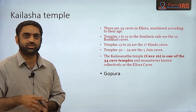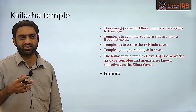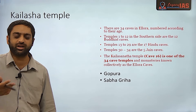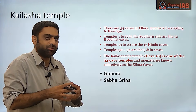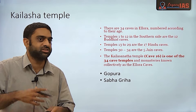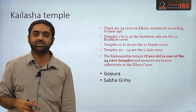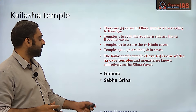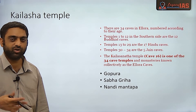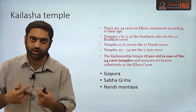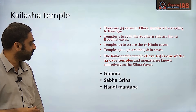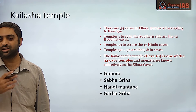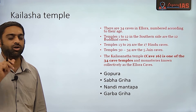Once you enter through the entrance gate, you encounter various mantapas. First is the Sabha Mantapa, or Sabha Griha — the assembly hall where people gathered for functions and dance performances. Then you have the Nandi Mantapa, because before entering any Shiva temple you must pass through the Nandi. Finally, you have the Garbha Griha — the Sanctum Sanctorum — where the main deity's idol is enshrined.